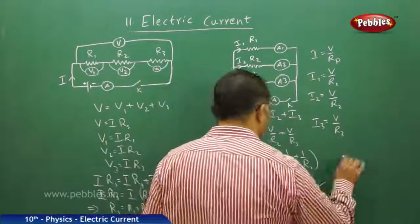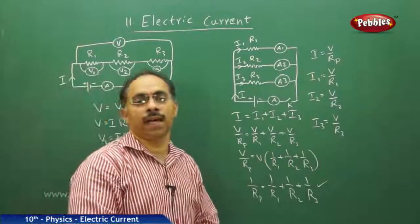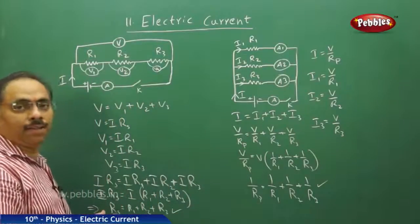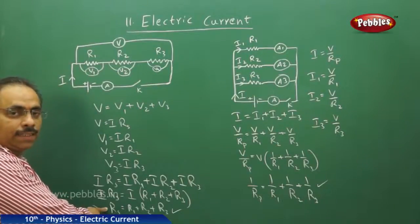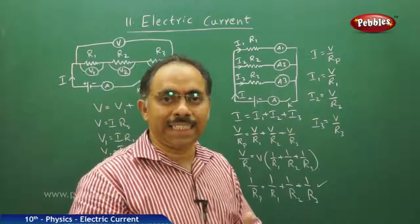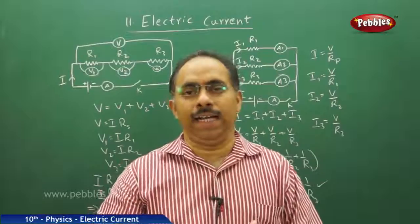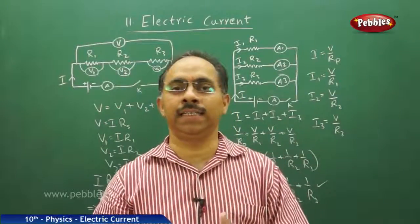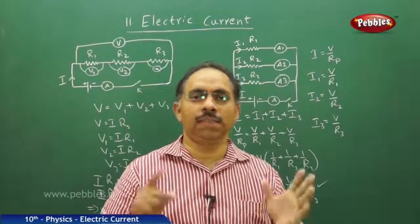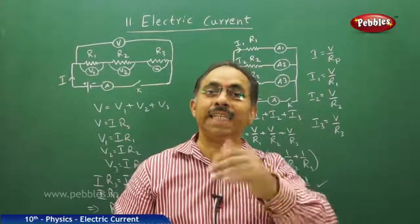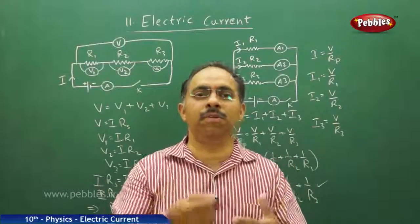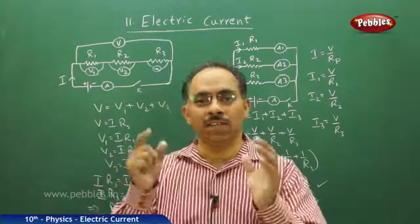One key observation for series: the total resistance Rs equals the sum of all resistors connected in series, meaning the net resistance is greater than any individual resistor — even the largest one. For example, if I have 10 ohms, 3 ohms, and 2 ohms connected in series, the total resistance is 15 ohms, which is greater than the greatest value of 10 ohms in the combination.